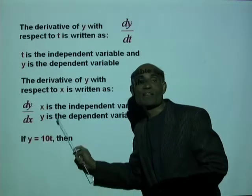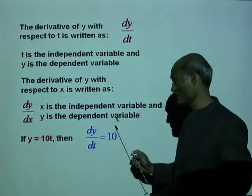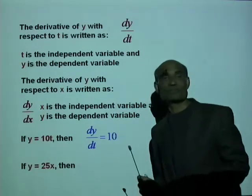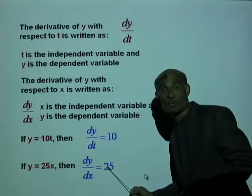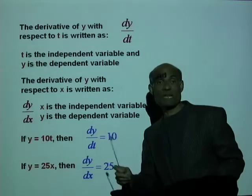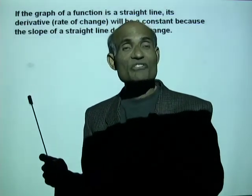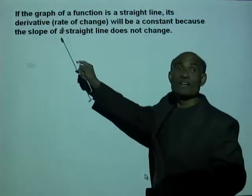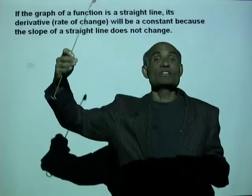If y equals 10t, then dy by dt equals 10. If y equals 25x, then dy by dx equals 25 — the rate of change of y with respect to x is 25, meaning when x changes by one unit, y changes by 25 units. The example we saw is the case of a linear function where the rate of change is constant. The graph is a straight line and the derivative is constant, because the slope of a straight line does not change.